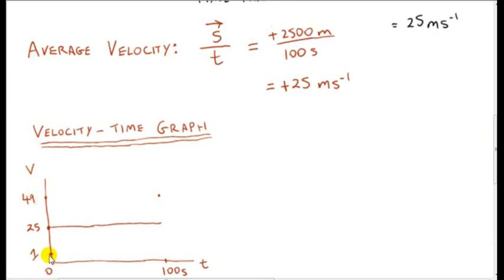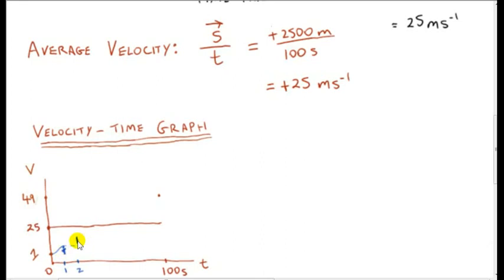When I say the car's speed increases uniformly from 1 meter per second to 49 meters per second, I mean that for each unit of time — no matter how small, whether it's one second, half a second, a quarter of a second, a millisecond — the speed will increase by the same amount. So if our unit of time is one second, the speed will increase by a certain amount, and after the same unit of time it will increase by the same amount again. Basically, the velocity-time graph will be a straight line.